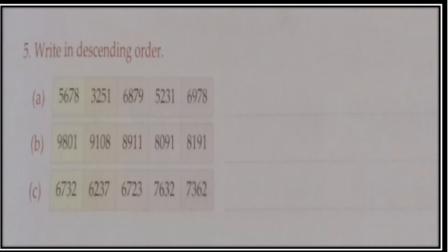Now children, you have to write in descending order — that means from largest to smallest. Again you have to do comparison. See Part A: compare the thousands place. Two numbers have 5 at the thousands place, two numbers have 6, and one has 3. Since 6 is the greatest, compare those two at the hundreds place: one has 8 and the other has 9, so 9 is greater — so 6978 comes first, then 6879. Then compare the two numbers with 5 at thousands place at their hundreds place: 6 is greater than 2, so 5678 comes next, then 5231. And at last comes 3251.